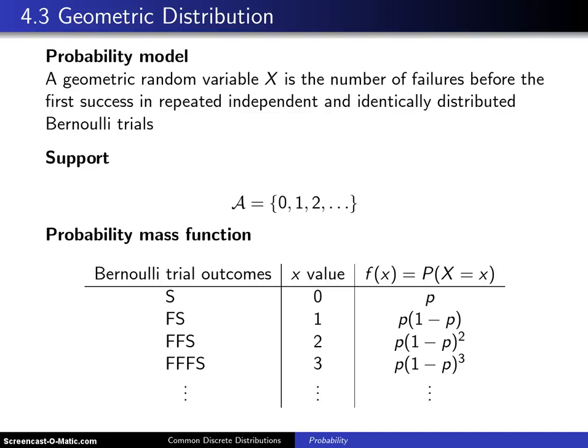The first two distributions in this chapter were the Bernoulli distribution and the binomial distribution. This section introduces a new distribution, which is known as the geometric distribution.